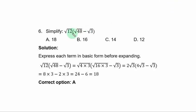Question 6. Simplify root 12, bracket open, root 48 minus root 3. Solution, express each term in basic form before expanding. Especially root 12 and root 48. What you do here is that you express 12 and 48 by bringing out the perfect number in there. Then, factor of 12 and 48 that is a perfect number. So, 12 becomes 4 times 3. 48 becomes 16 times 3.